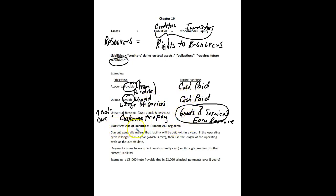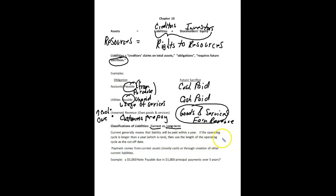Let's look at classifications, because we can classify liabilities as either short-term, which is current, or long-term. The current category generally means a liability will be paid within one year. It's also possible to use the operating cycle instead of a year if the operating cycle is longer than a year, though that's really rare.